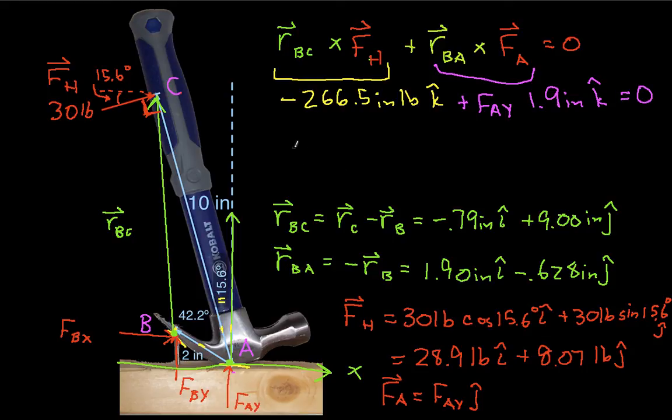From this we can solve for FAY. FAY is 266.5 inch-pounds divided by 1.9 inches, so it ends up being 140.3 pounds. So we've gotten FAY. We still need to get FBy and FBx, but I'm out of time, so this will have to happen in part two of the video. See you there.